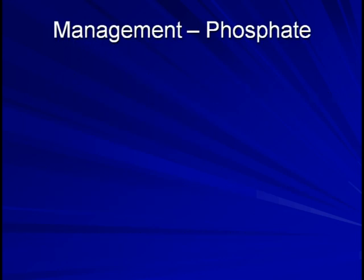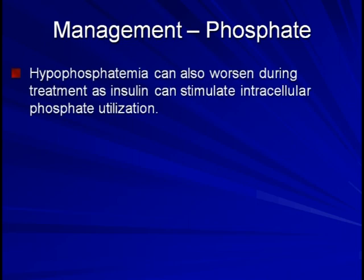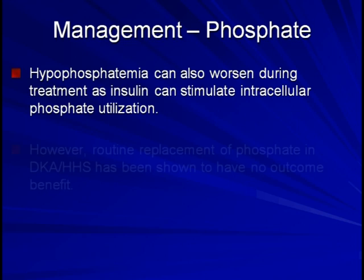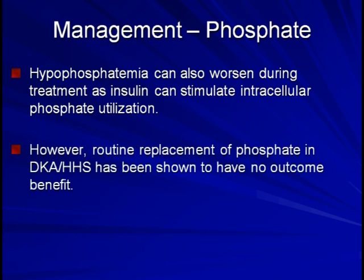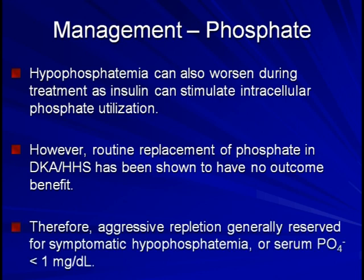Phosphate is another electrolyte to monitor. Hypophosphatemia can develop or worsen during treatment, as insulin stimulates intracellular phosphate utilization such as in the formation of ATP. However, routine replacement in DKA and HHS has been shown to have no outcome benefit. Therefore, aggressive repletion is usually reserved for those patients with symptoms or complications of hypophosphatemia, or when serum phosphate drops below 1 mg per deciliter, which is quite uncommon.